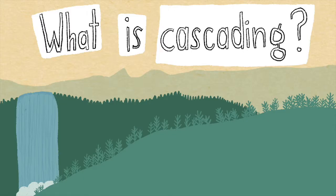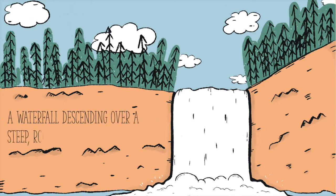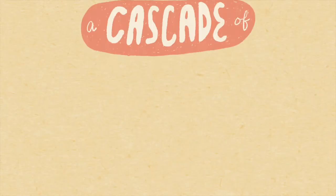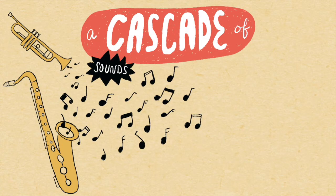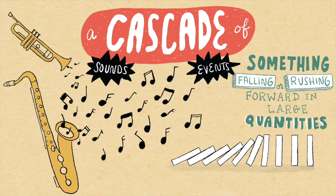What is cascading? You have certainly seen a cascade before — a waterfall descending over a steep, rocky surface. You may have also encountered this word in other contexts: a cascade of sounds or a cascade of events, where this word is used metaphorically to refer to something falling or rushing forward in large quantities.